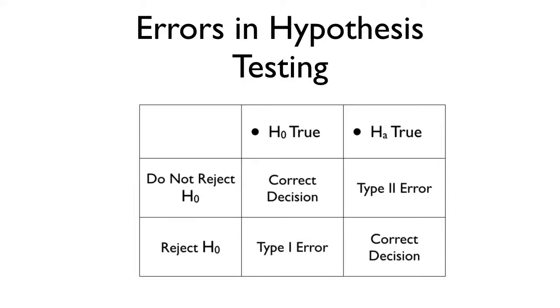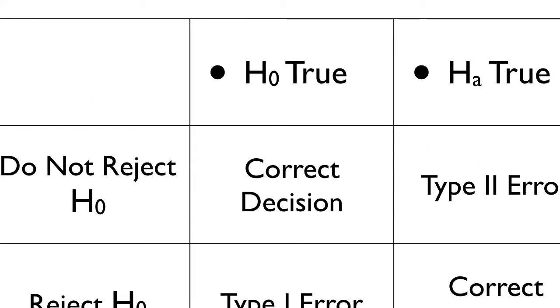But in reality, it's the case that H0 actually could be true. It could be that they both come from the same distribution, those two sets of scores, or that there is no difference between the scores. Or H-A could be true, that they are different, they come from different distributions, or whatever. So you take a look at this. If we do not reject H0 and H0 is true, we have a correct decision.